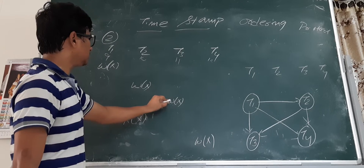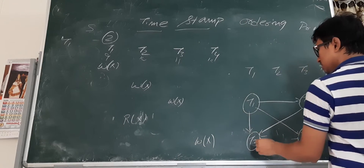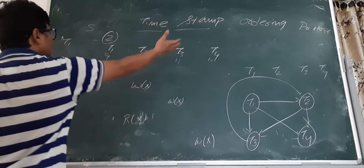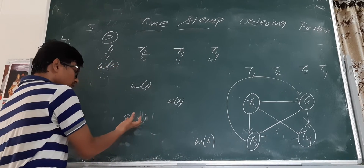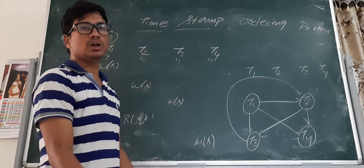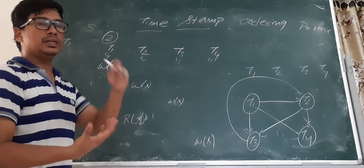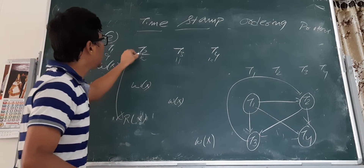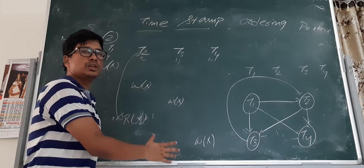Now we come to transaction three to transaction two, because it is a write then read conflict. It is saying that transaction three should be executed, then transaction two should be executed. Whether it is allowed or not — it is not allowed. According to timestamp ordering, the order must be t1, t2, t3, then t4. But because of this write-read conflict, the required order is t3 before t2, which is not allowed. So this schedule is not following the timestamp ordering protocol. To fix it, you should roll back the conflicting operations and re-execute them in the correct order.